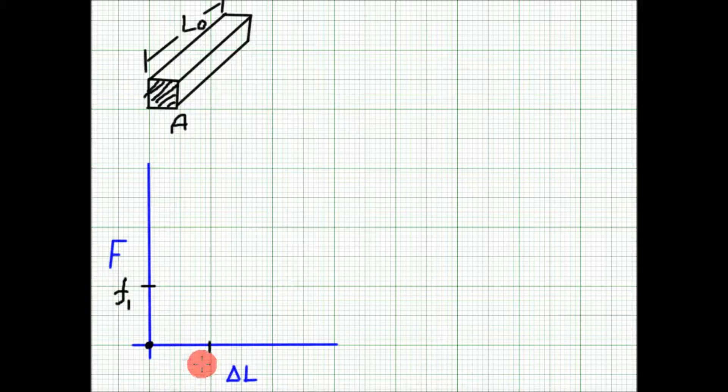The change in length is delta L1, so we have another point here. Let's say we apply double the force F2 and we get double the change in length delta L2, so we get another point here.